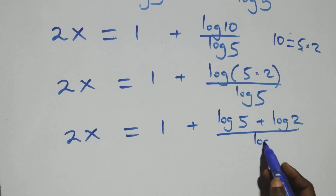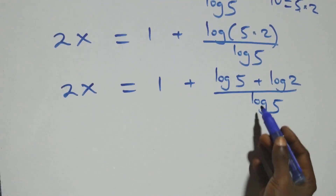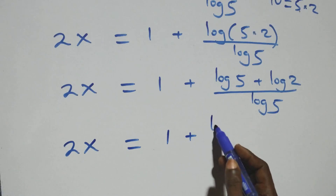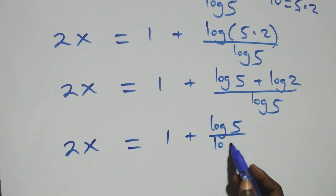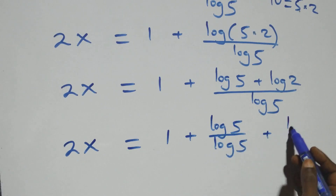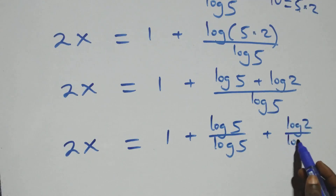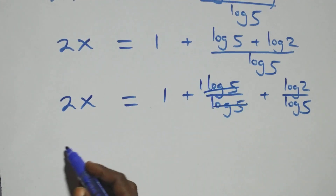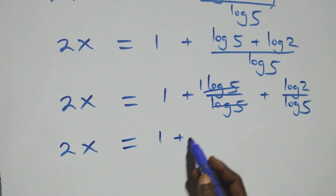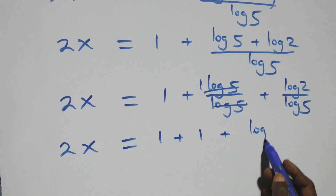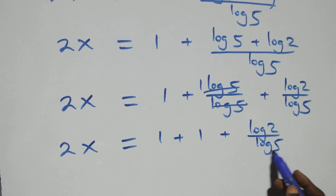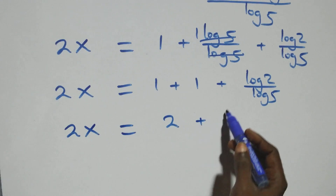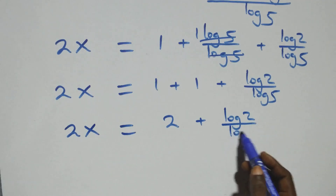We separate these into two fractions: 2x equals 1 plus log 5 over log 5, plus log 2 over log 5. The log 5 terms cancel each other, leaving 1, which implies 2x equals 1 plus 1 plus log 2 over log 5. That is, 2x equals 2 plus log 2 over log 5.